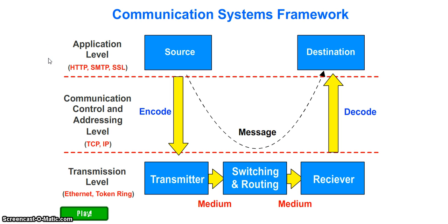There's the application level where the message is either created or saved and where it is viewed. The communication control and addressing level where the message is encoded before sending and decoded after sending, and the transmission level where the message is actually sent between devices.